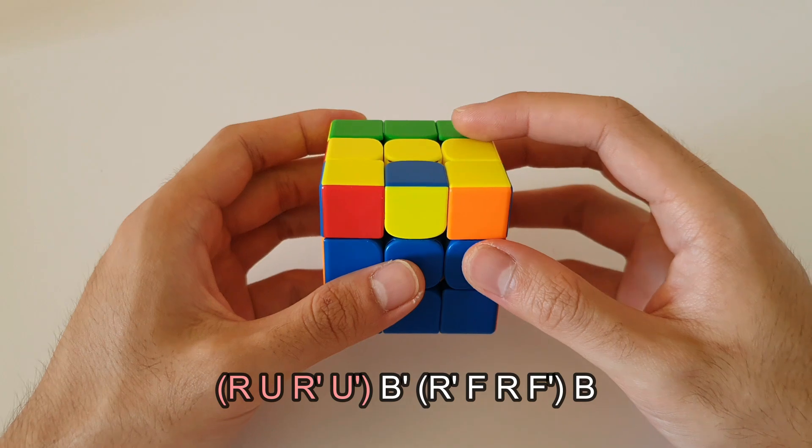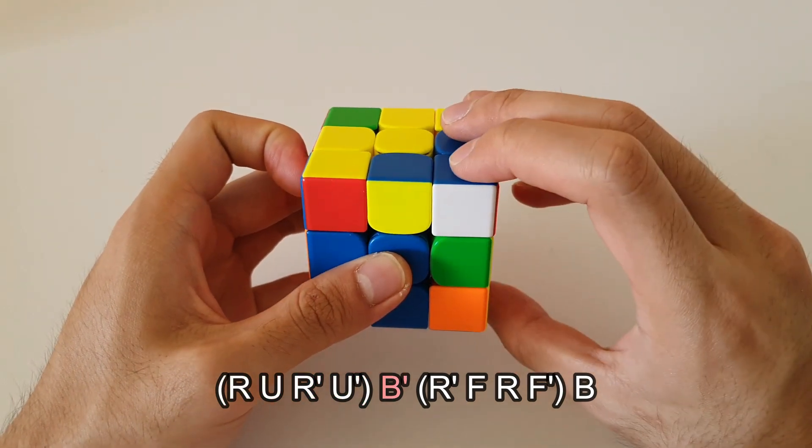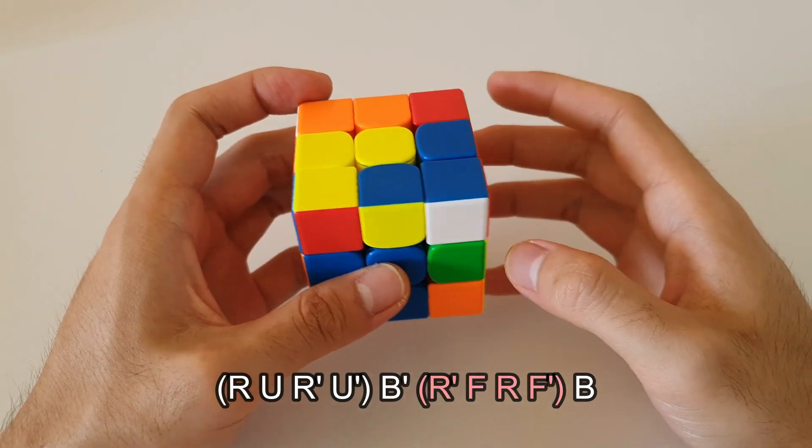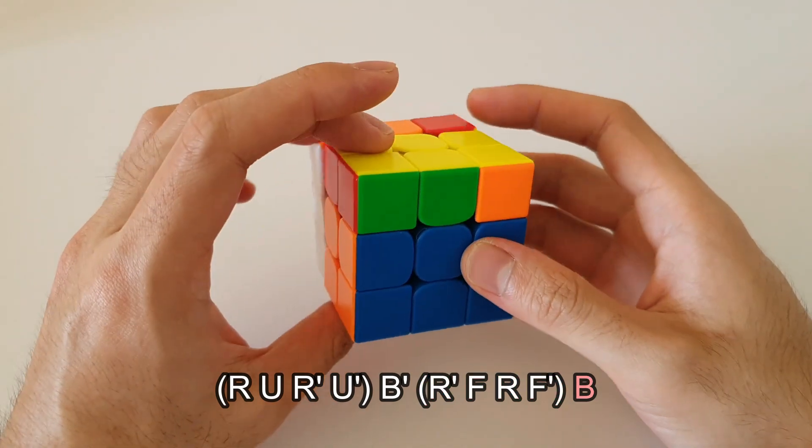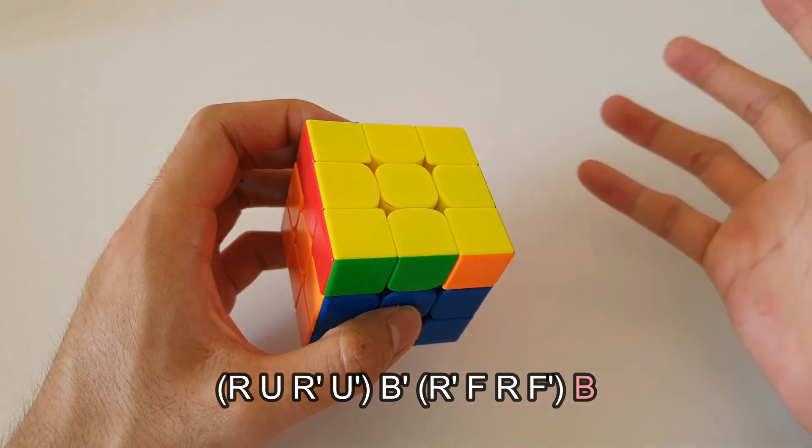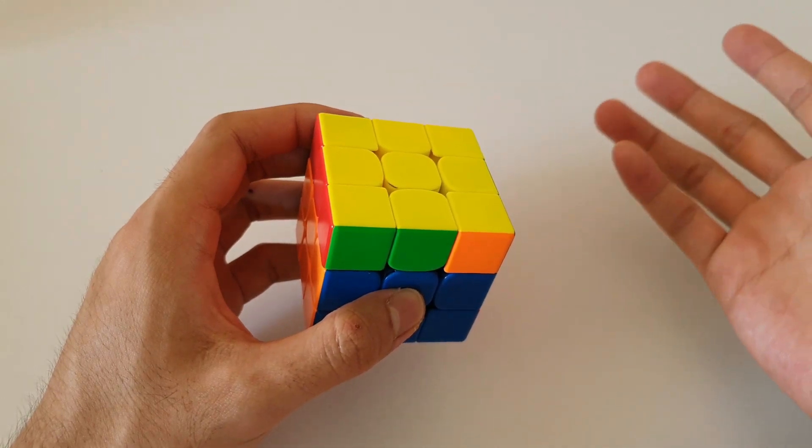So it starts off with a sexy move. Like this. You follow that up with a B' move. And now you do a sledgehammer. And then you end off with a B move. Like this. So the finger tricks on that algorithm are not as nice but it is rather easy to remember.